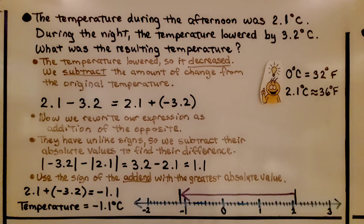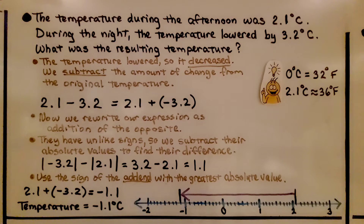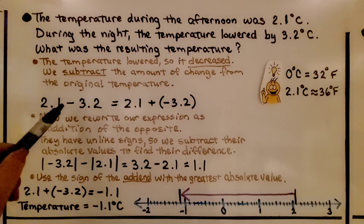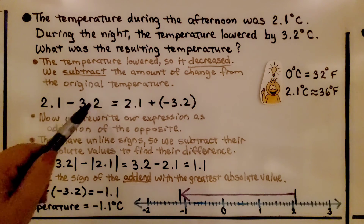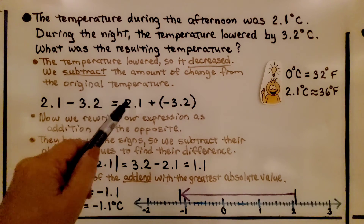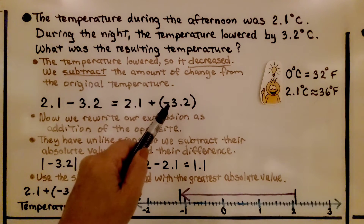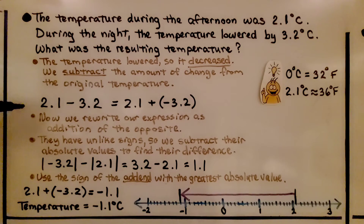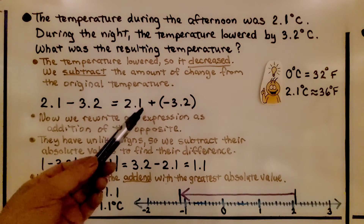Here's our first example. The temperature during the afternoon was 2.1 degrees Celsius. During the night, the temperature lowered by 3.2 degrees Celsius. What was the resulting temperature? The temperature lowered, so it decreased. We subtract the amount of change from the original temperature. We have 2.1 minus 3.2, which is equal to adding the opposite: 2.1 plus negative 3.2. So we rewrote our expression as addition of the opposite.